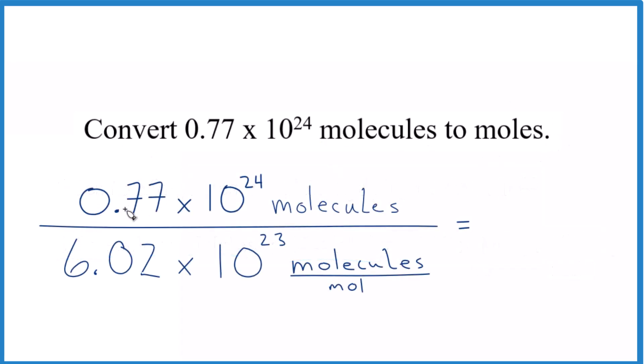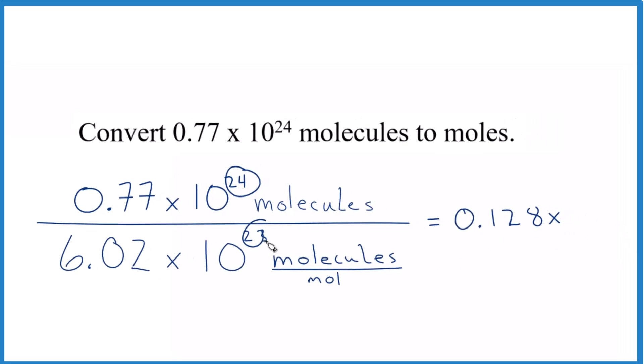So 0.77 divided by 6.02, that's 0.128. And then for the exponents, we just subtract. So 24 minus 23, that gives us times, that gives us 1, so 10 to the first power. And this is basically 0.128 times 10. So we could just call it 1.28.